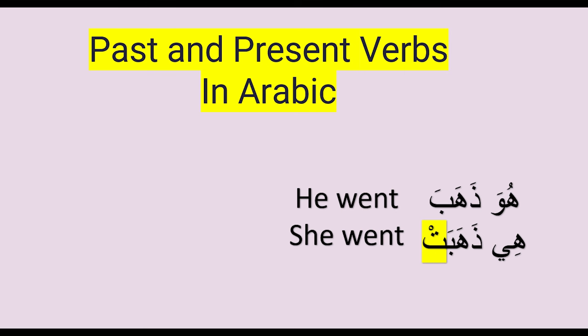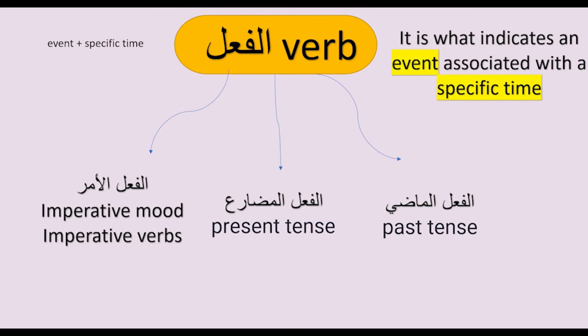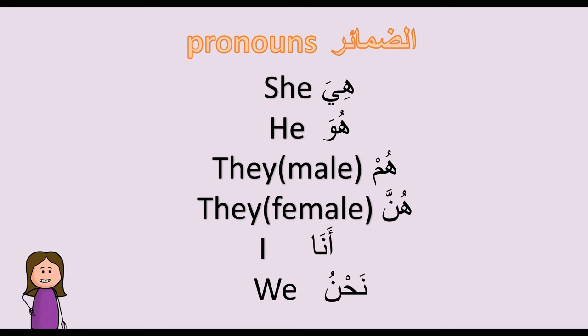First of all, you need to know what is the verb in Arabic. It is what indicates an event associated with a specific time. Verbs in Arabic are divided into three parts: الفعل الماضي، والفعل المضارع، والفعل الأمر — the past, present, and imperative verb.